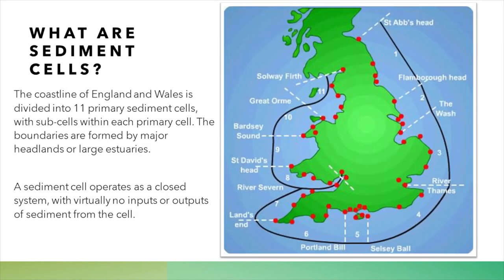In this image, we can see the sediment cells of the UK. England and Wales is divided into 11 primary sediment cells. These are areas that are kind of closed systems — there is very, very little input or output beyond their boundaries. The boundaries are regulated predominantly by large geological structures, such as headlands or estuaries. Because of the shape of the land, it is very, very hard for sediment to move outside of these zones.